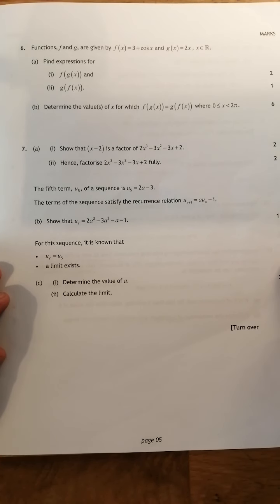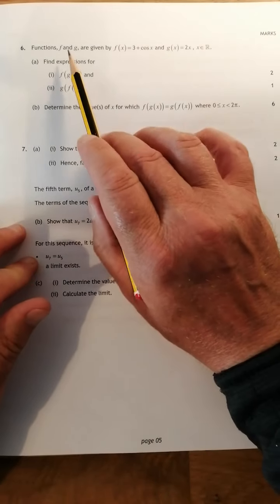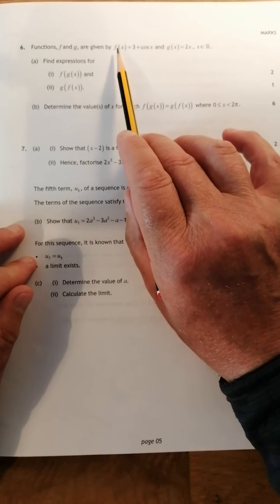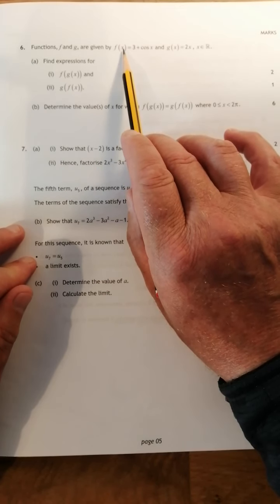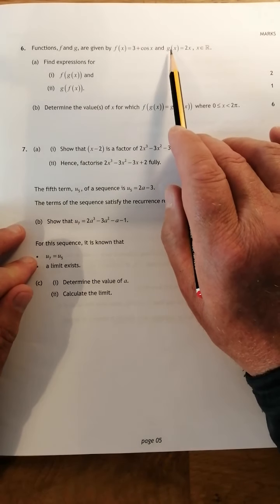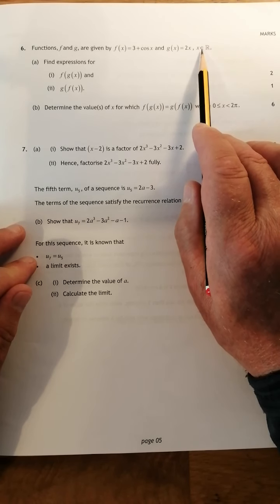Hi guys, Mr. Lee's doing the Scottish Higher Mathematics from 2018 paper 2. We're going to be doing question 6 where you're given two functions called f and g. The function f given in terms of x is 3 plus cos x, and the function g given in terms of x is 2x, where x is a member of the set of real numbers.